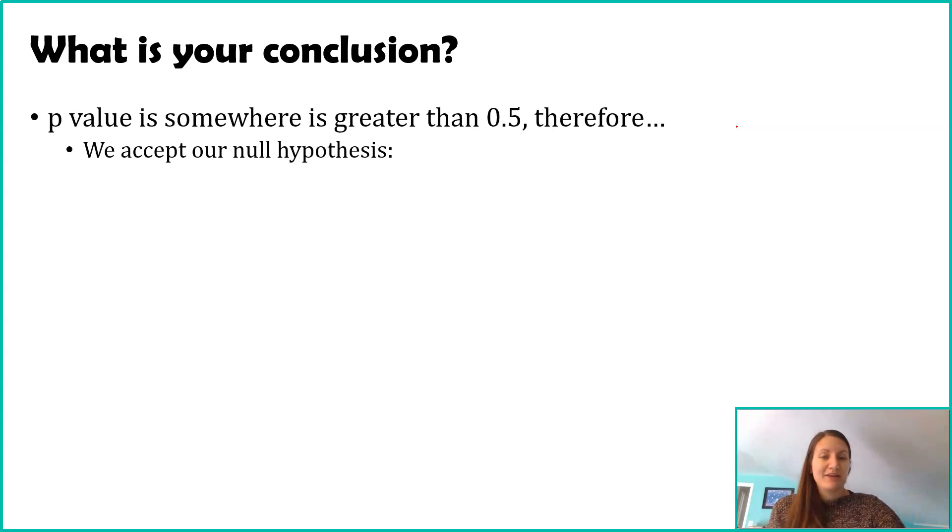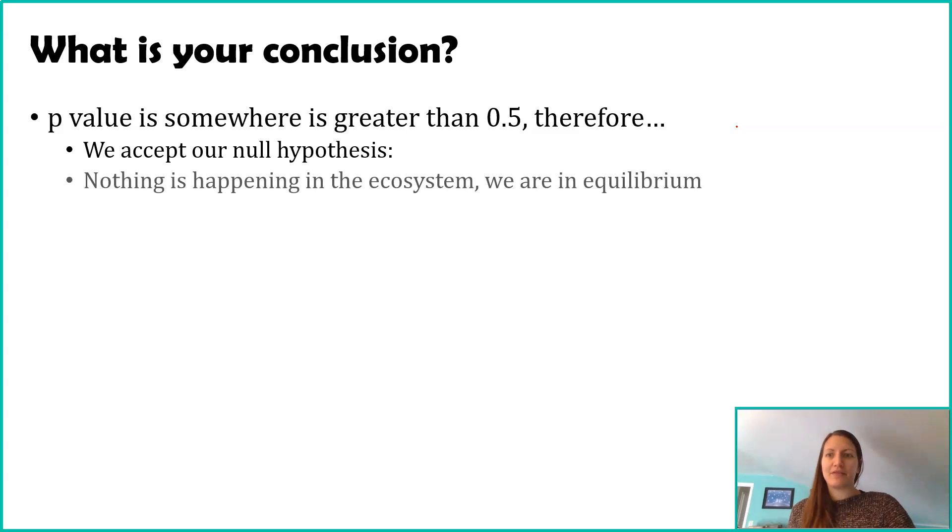So finally, we know our p-value is greater than 0.5, therefore we accept, or maybe the better language, fail to reject our null hypothesis. And that's great, right? We have evaluated our null hypothesis, but bring this back to the science. Bring this back to the question. Okay, you accept our null, so what's happening with these snails? And so be sure that not only do you evaluate your null, be sure to actually talk about what is happening in the science. What is happening in the ecosystem?